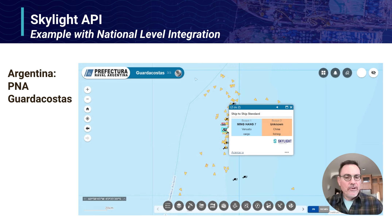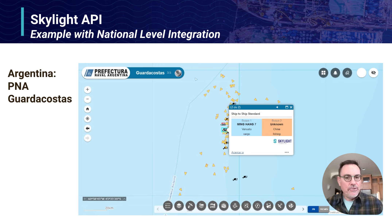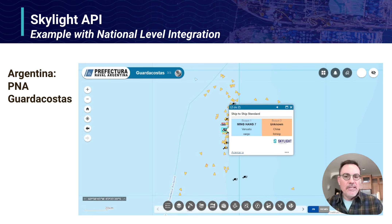Here's another example with one of our partners — in this case, from Argentina with the Coast Guard of Argentina. They have a platform of their own, which is the screen image we're seeing right now. That small card in the middle of the screen shows details of an event that originated from Skylight, retrieved from our API. You can in fact see that they've included the Skylight logo on the lower right of that card.